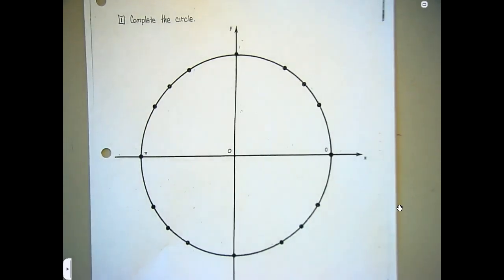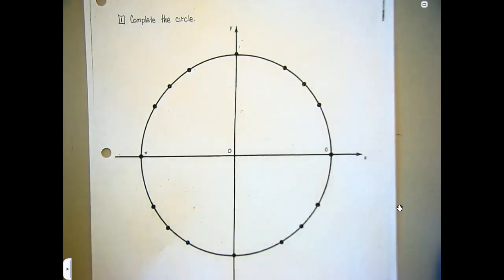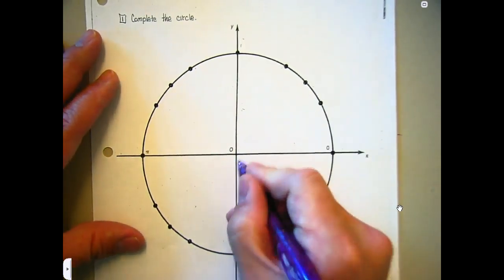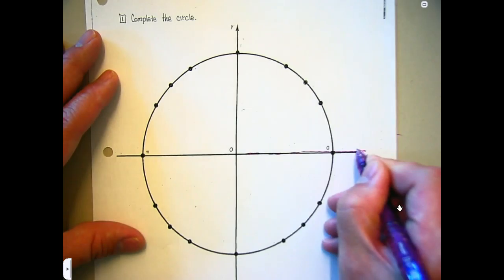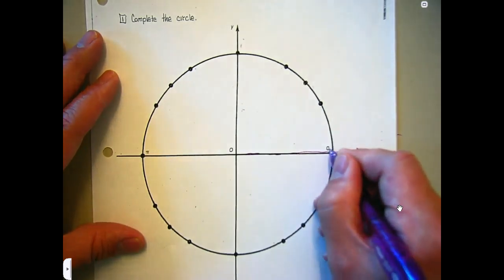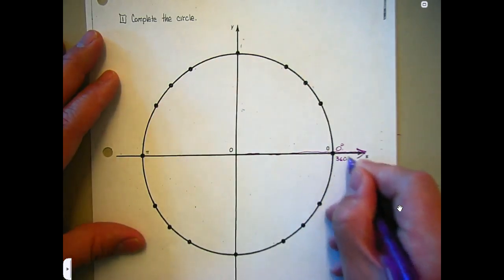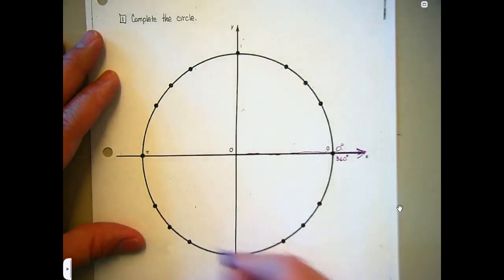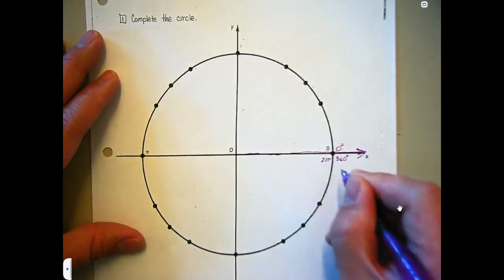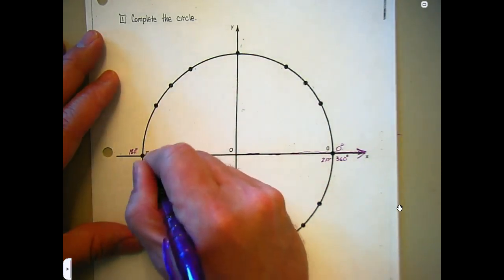This is a continuation from yesterday when we're filling out the unit circle. Remember that you don't have to put the degrees on the outside and radians on the inside, but it's sometimes helpful. When we started yesterday, this is our standard position — our initial side starts from here. As I rotate around one time, that zero degrees becomes 360 degrees. And 360 degrees is 2π radians, which means 180 degrees is π radians.